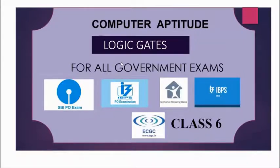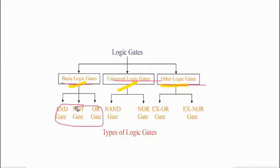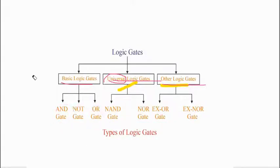If you haven't watched the previous video, you can go to my channel where I have created a separate playlist. Now, logic gates are divided into three types: basic logic gates, universal logic gates, and other logic gates. Remember this — there can be classification-based questions. Basic gates are AND, NOT, and OR. Universal gates are NAND and NOR. Other logic gates are XOR and XNOR. So basically there are seven types of logic gates.